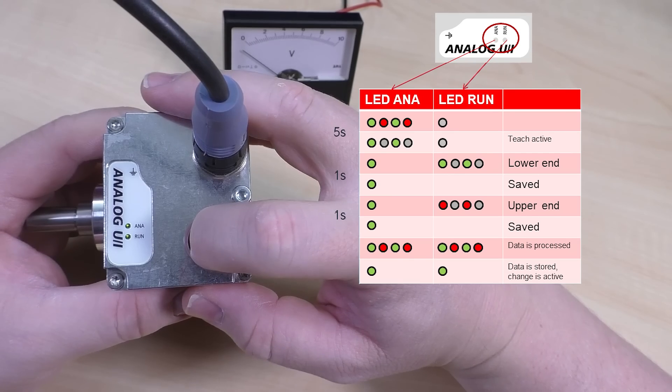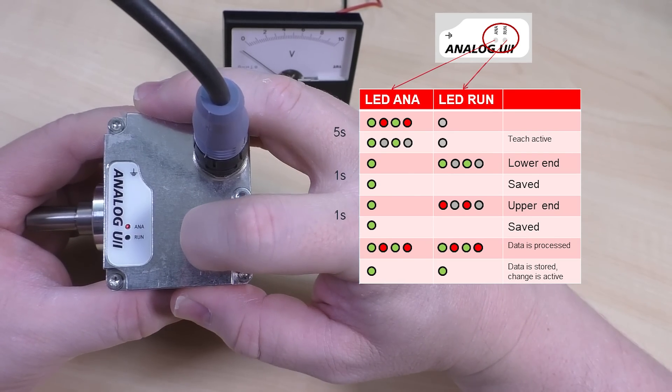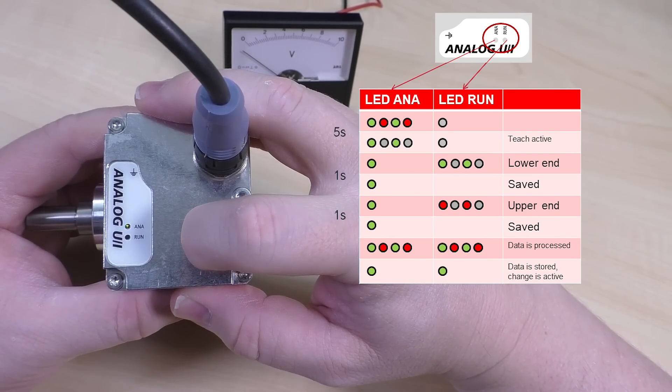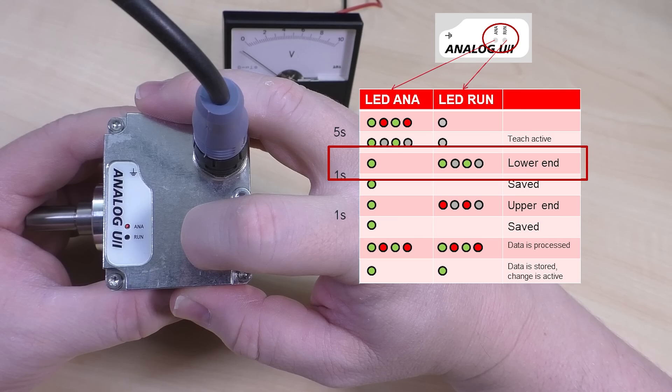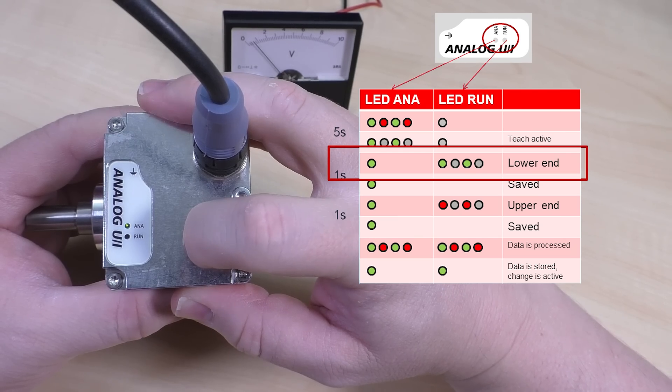Press and hold the teach button. The analog LED will flash red and green, then just green. Let go of the button once you see this pattern. The analog LED will be solid green.